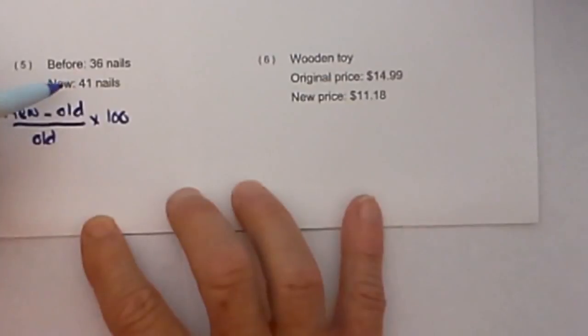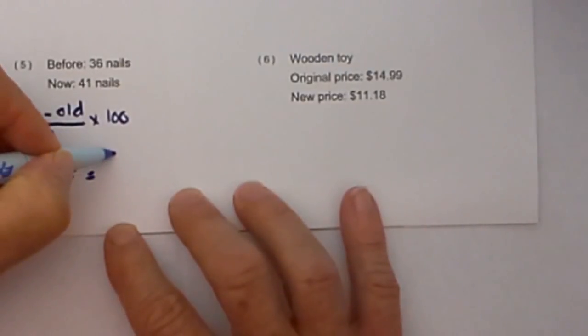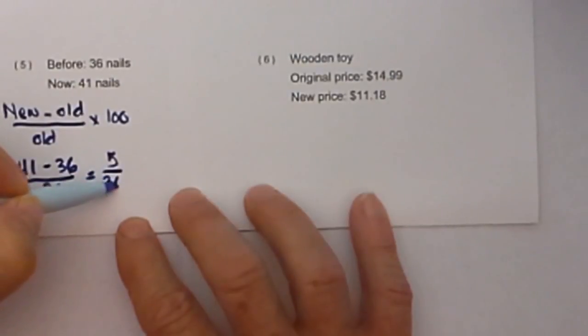I'm going to take the new, which is 41 nails, minus the original, which is 36, over the old, which is 36. So 41 minus 36 equals 5, and then 5 over 36. If you divide 5 by 36, that equals 0.14.